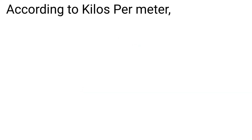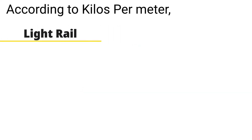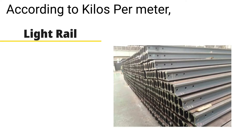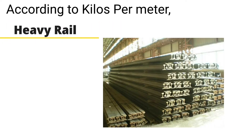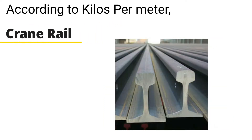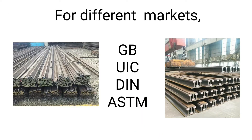According to kilos per meter, steel rail normally includes light rail, heavy rail, and crane rail. For different markets, steel rail can be classified into GB, UIC, DIN, ASTM, etc.